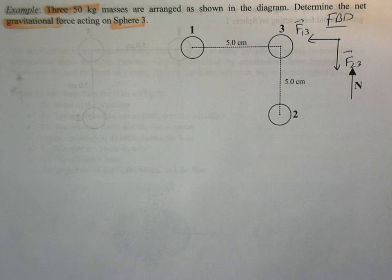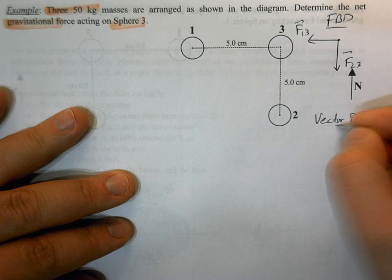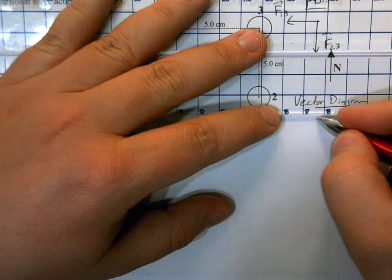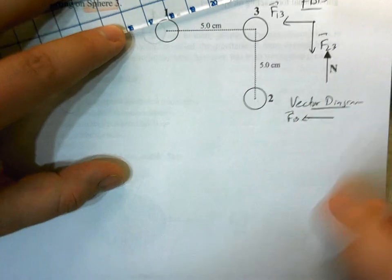When we do all the 2D stuff, we also want to draw a vector diagram to look at our net force. So for our vector diagram, first of all, we have that force 1, 3 going west.